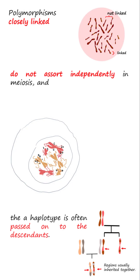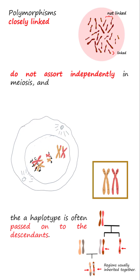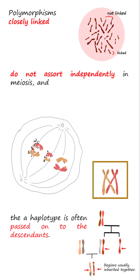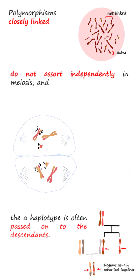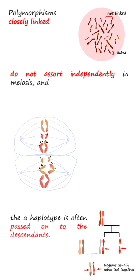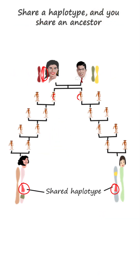Polymorphisms closely linked, unlike polymorphisms far apart on a chromosome or on different chromosomes, do not assort independently in meiosis, and a haplotype is often passed on to the descendants.